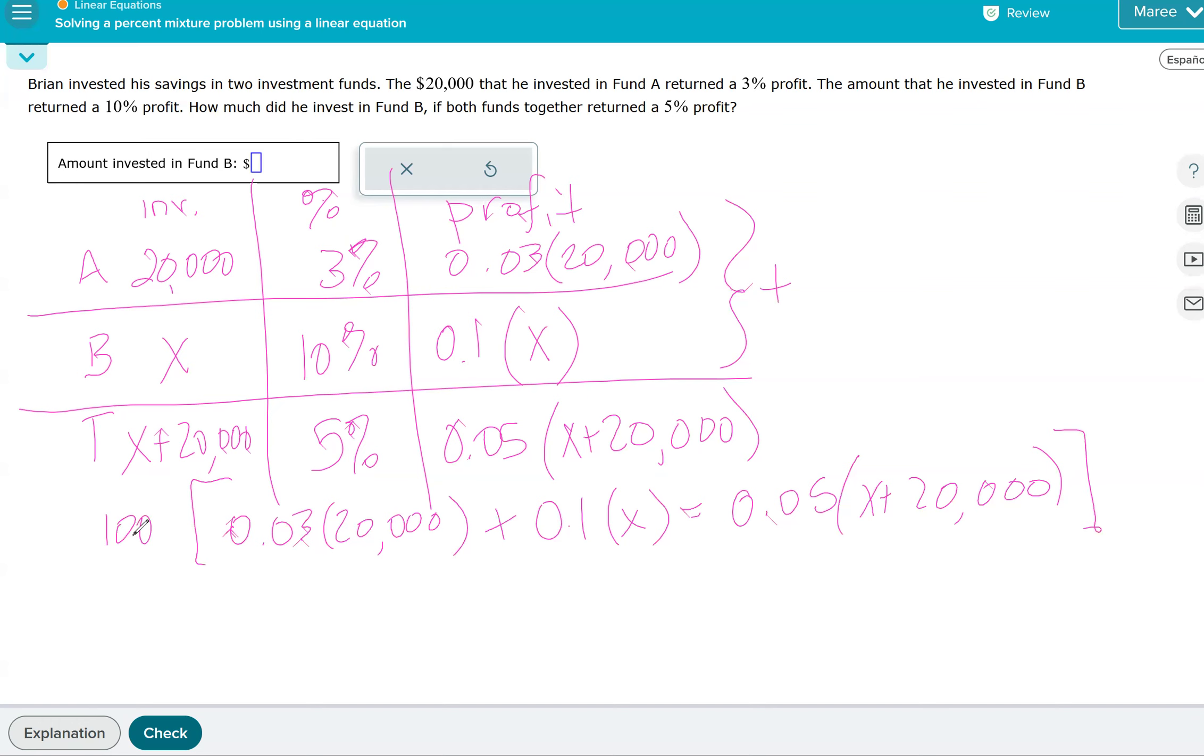I'm wondering if we didn't change those to decimals and we just left them 3, 10, and 5. That would work. That way we don't have to keep multiplying every time. So we have 3 times 20,000 plus 10X equals 5 times X plus 20,000. So we distribute, we get 5X plus 100,000 equals, and then 3 times 20,000, 60,000 plus 10X.